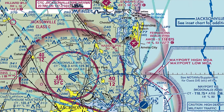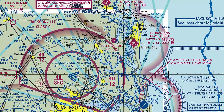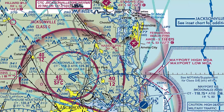Now remember, Class Charlie airspace works in layers. We use the analogy with Bravo and Charlie airspace like it's an upside-down wedding cake, like a multi-tiered wedding cake. For example, this inner ring here is from the surface to 4,000 feet, whereas this outer ring here is from 1,200 to 4,000 feet.